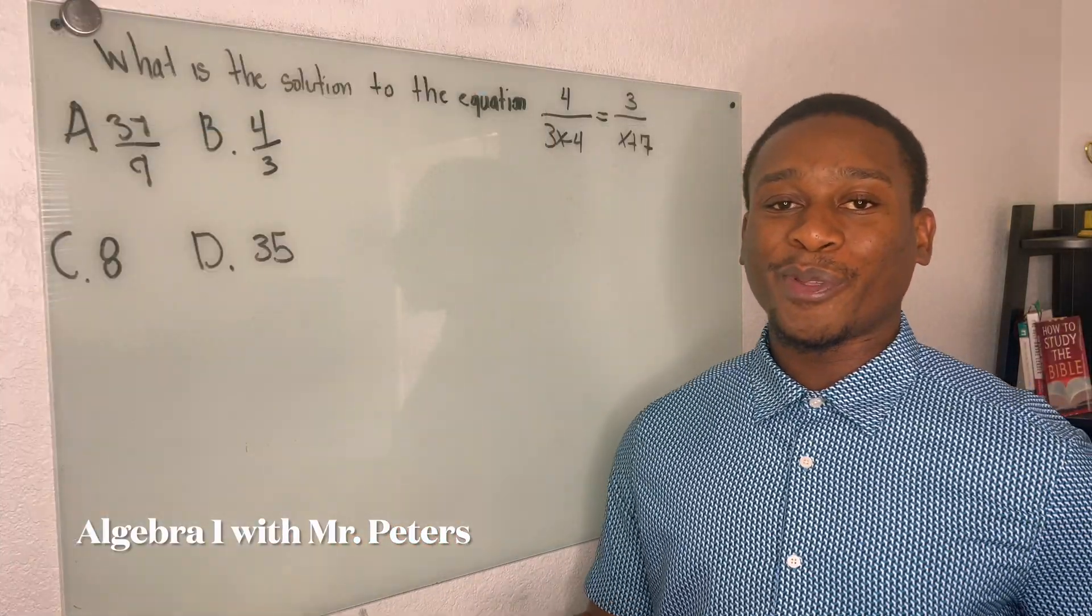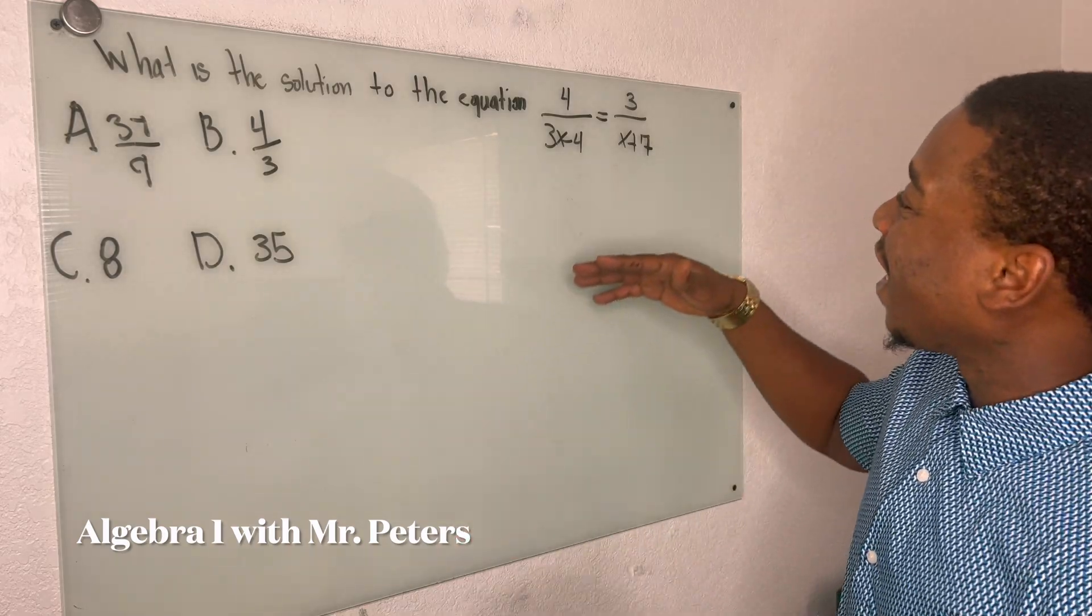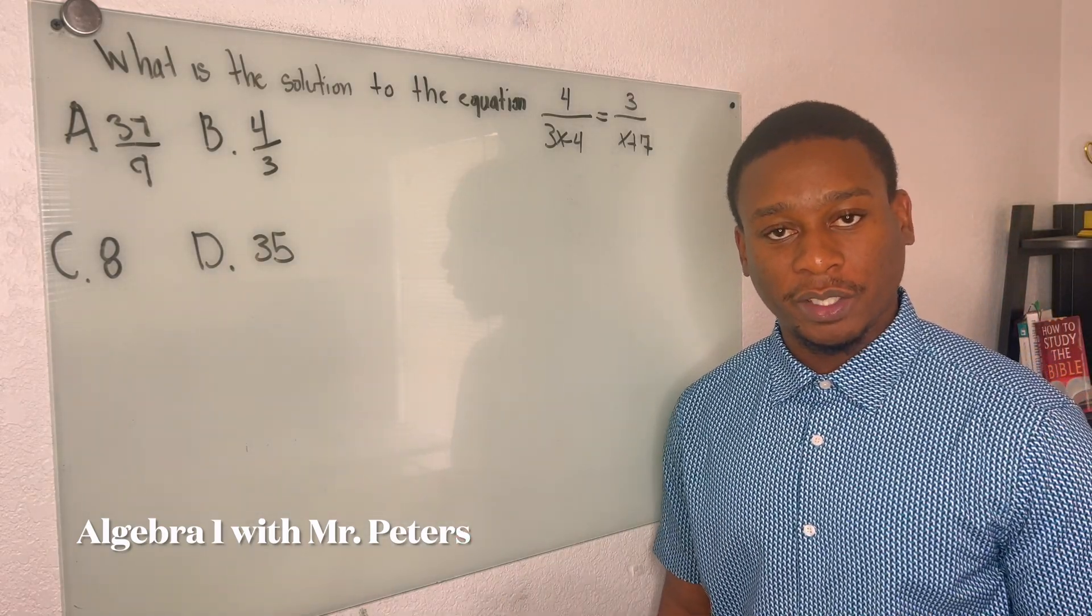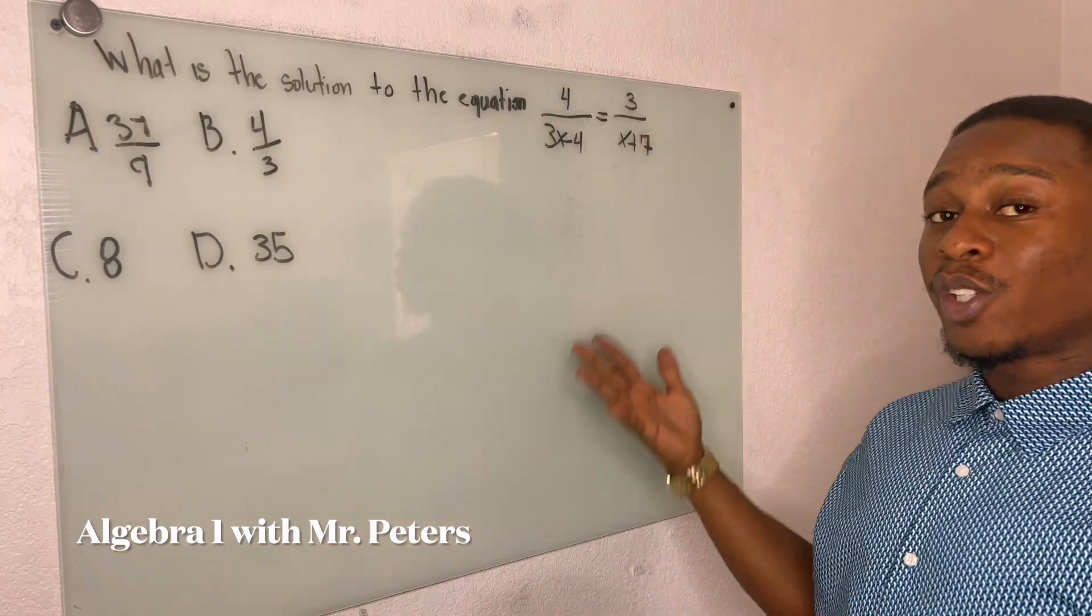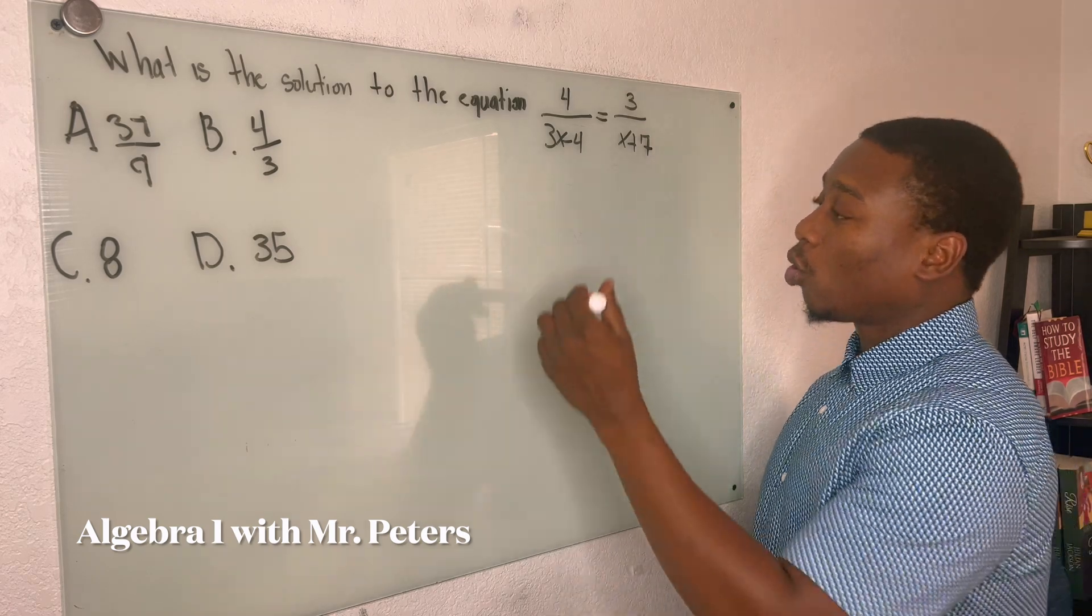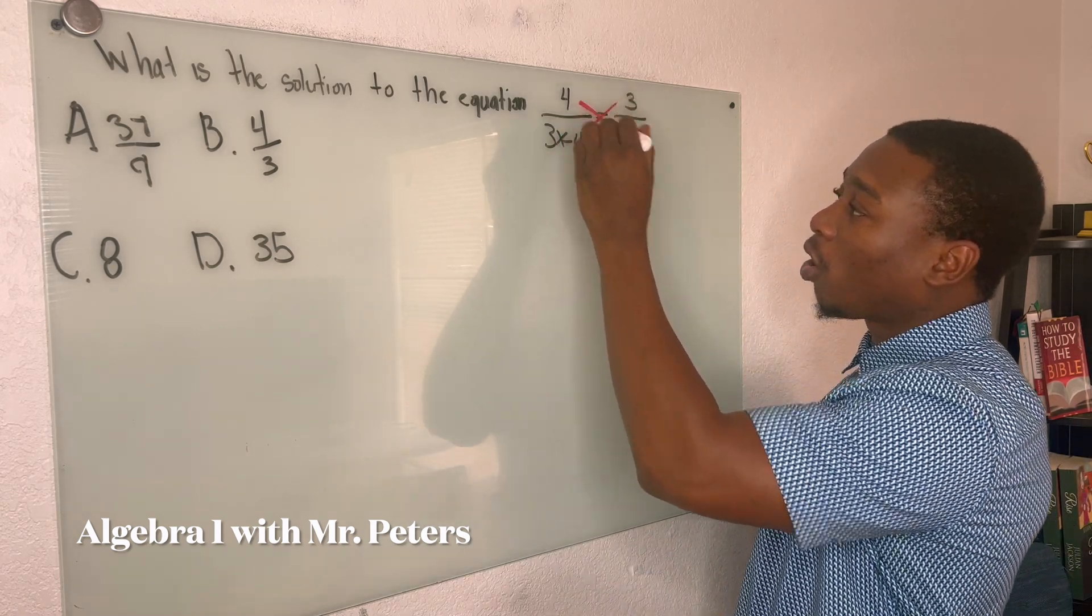So now we're moving on to problem number three. Problem number three is giving us an equation to solve that involves a fraction. But because we don't have any exponents, we could kind of set this up like a proportion. So to solve the proportion, we're going to cross multiply.